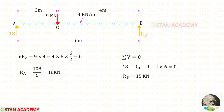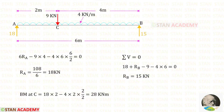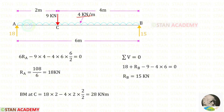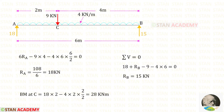Now let us apply sigma V = 0 to find Rb. Next, let us find the bending moment at point C. From point A, Ra is acting clockwise so it is positive and the distance is 2. The uniformly distributed load is acting anti-clockwise, so it is negative; for the UDL we multiply with the distance and distance divided by 2. For the bending moment at C we get 28 kilo newton meter.